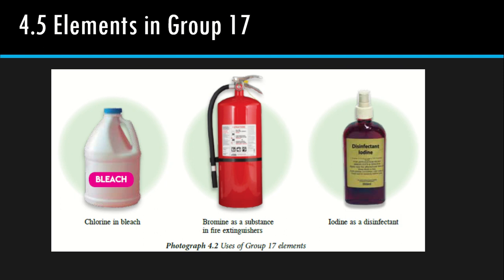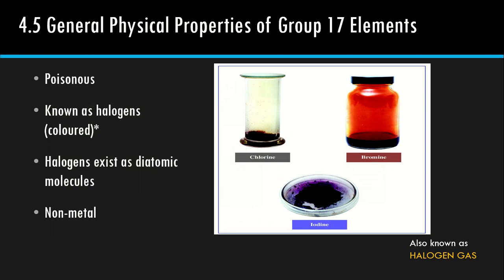General physical properties of Group 17 element: it is poisonous. Semua Group 17 ni sangat berbahaya, beracun. Known as halogen. Dan dia berwarna. Halogen exist as diatomic molecules — semuanya Cl2, F2, Br2. So they are non-metal because they are gases.